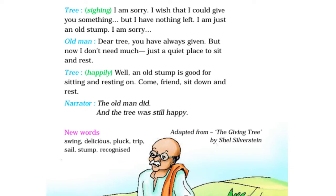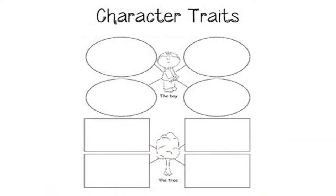Have you all enjoyed this story children? Now write some describing words for the tree and the boy. Write about the character traits of the boy and the tree. So how was the tree? It was very helpful, friendly, lovable, caring, protecting. Now how was the boy? He was very silly, childish, selfish. So write the character traits of the boy and the tree.